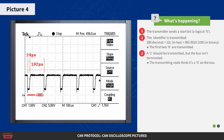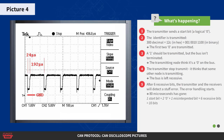Then a one should be transmitted. But as the bus isn't terminated, the rising slope is not what it should have been. The transmitting node will now think it saw zero on the bus. Since this happens during the arbitration phase, the transmitter will stop transmitting — it thinks that some other node is transmitting. The bus will now be left recessive because no one is in fact transmitting. After six recessive bits, both the transmitter and the receivers will detect a stuff error and error handling starts.